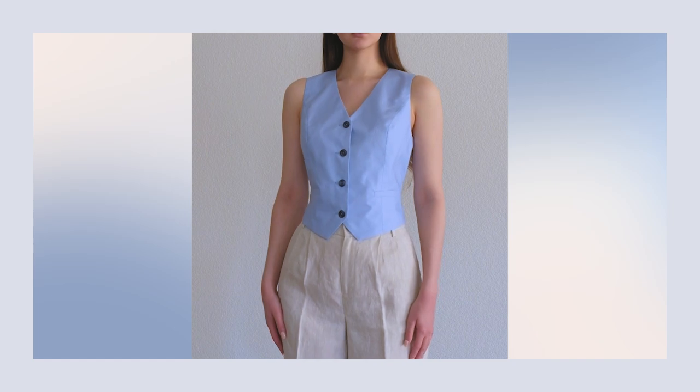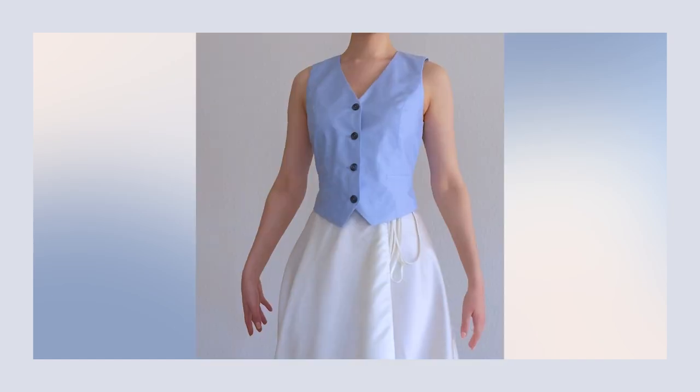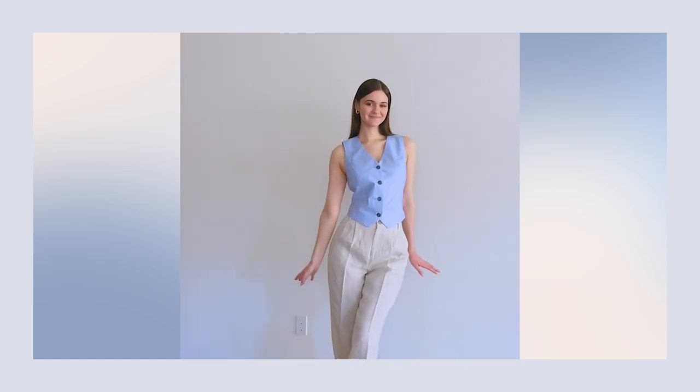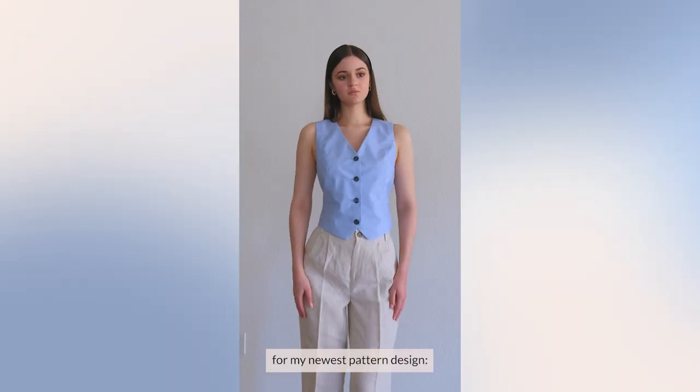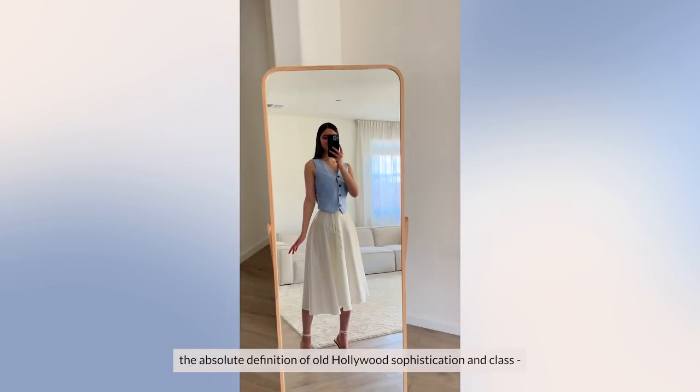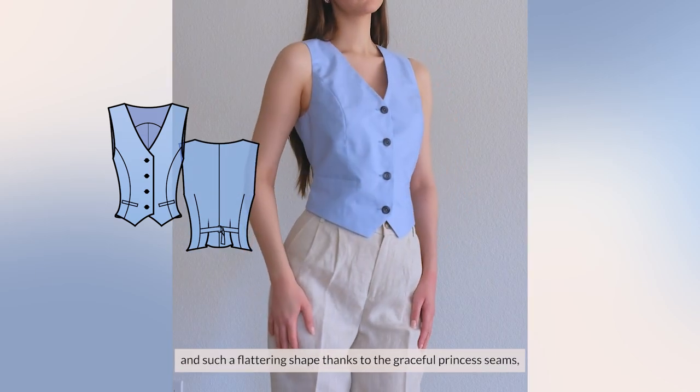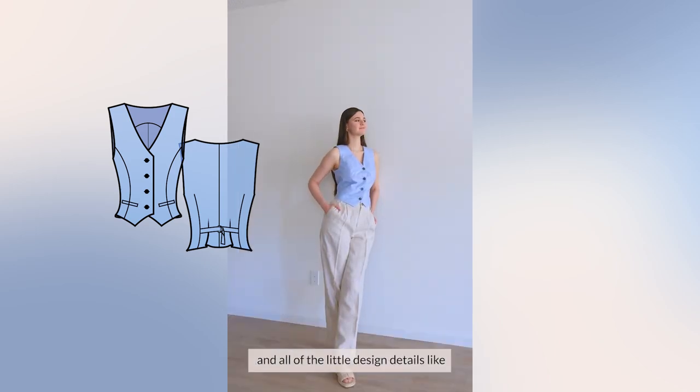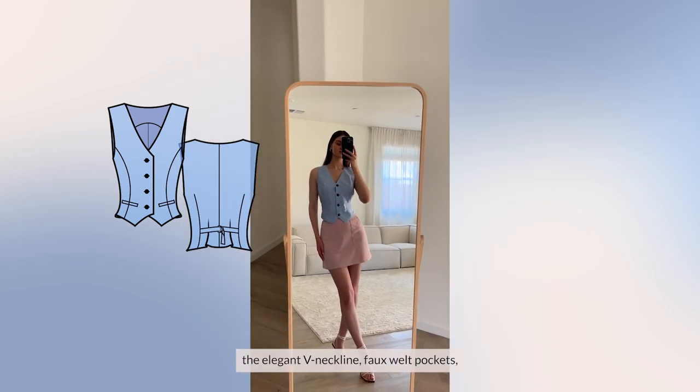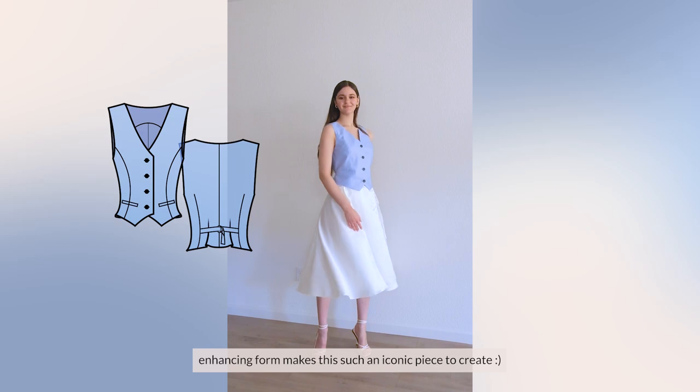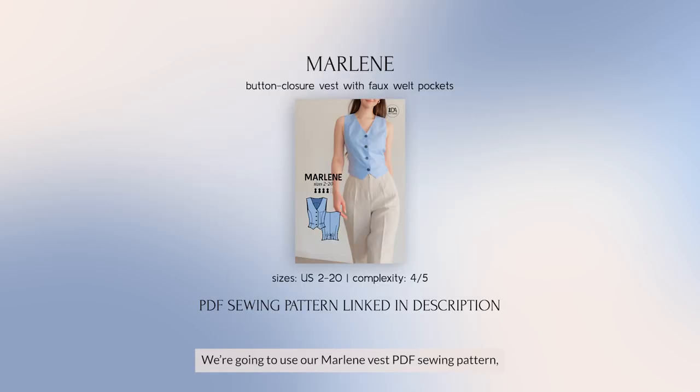Hello and welcome to Dress Niki Amore. Today I'm pleased to bring you the tutorial for my newest pattern design, the absolute definition of old Hollywood sophistication and class. This Merlin vest has a beautiful structure and such a flattering shape thanks to the graceful princess seams, and all of the little design details like the elegant v-neckline, faux weld pockets, and the prettiest D-ring closure at the back for that additional enhancing form makes this such an iconic piece to create. We're going to use our Merlin vest PDF sewing pattern, so to follow along, get yours at the link below in the description.